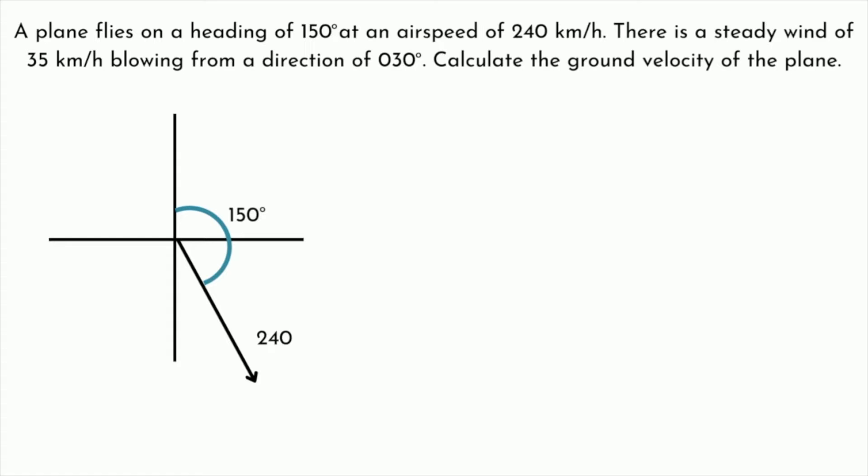The next thing we're told is that we have a 35 kilometer per hour wind blowing from a direction of 30 degrees, and again that is a true bearing. We know that's a true bearing because of the zero placeholder in front of the 30. So since the wind is coming from a direction of 30 degrees, we want to draw that vector so that the wind is blowing from that direction.